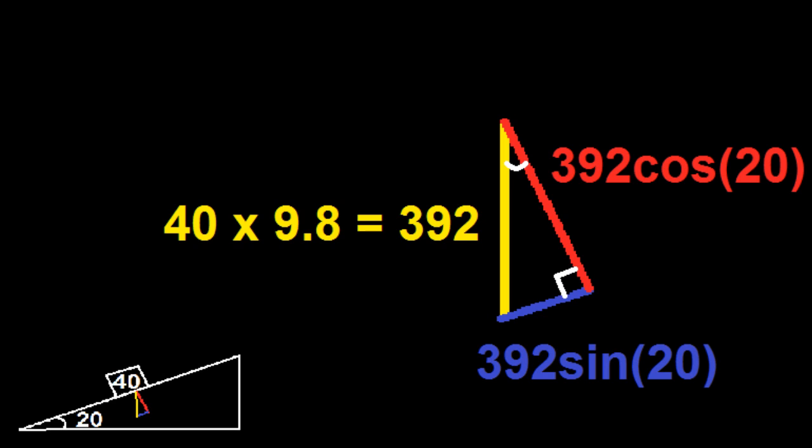Being that this is a right triangle and the angle is the same as the big triangle, we can just take 392 cosine of 20 and 392 sine of 20 to get the normal force and the force in the x direction.